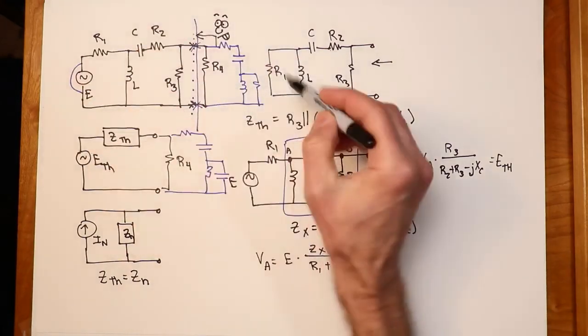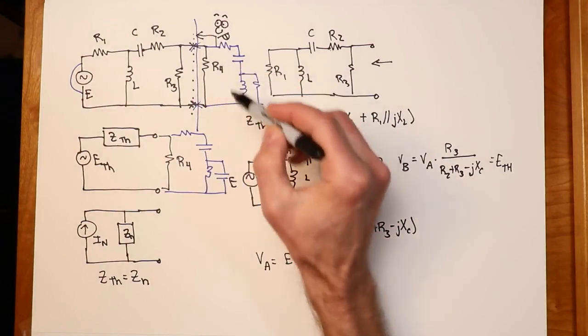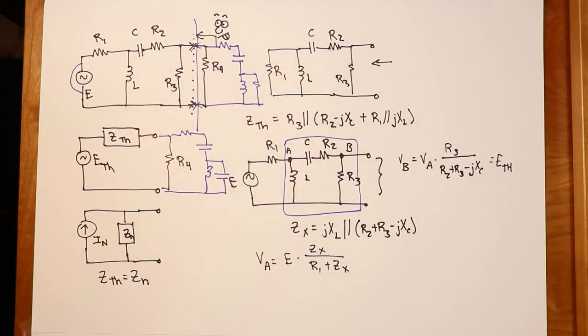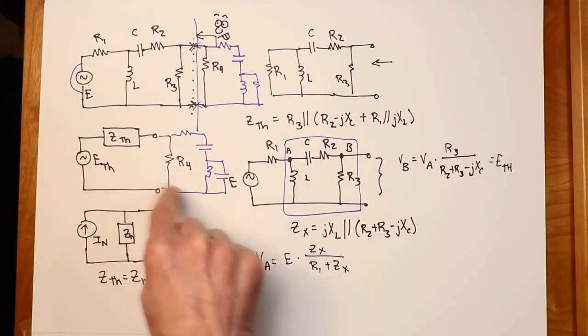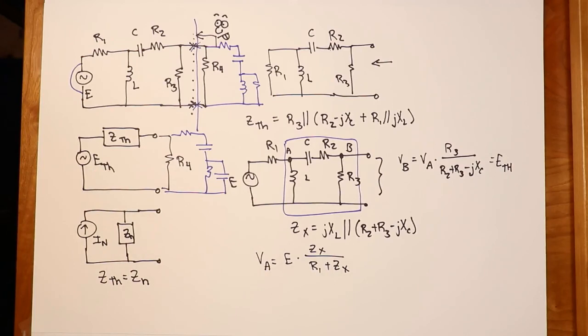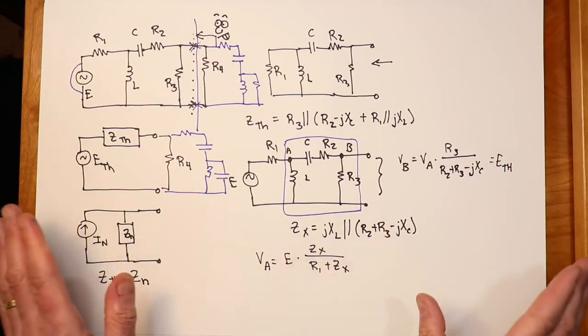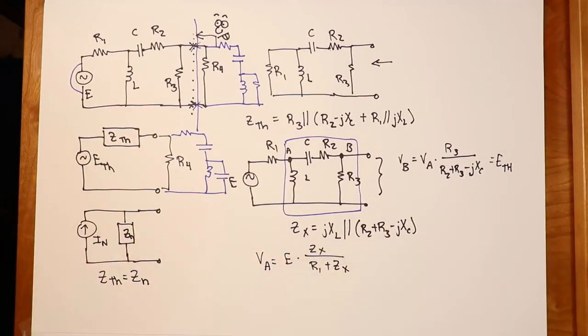This will come in very handy when we look at maximum power transfer. Interesting question is, in this circuit, what value of R4 would produce the maximum amount of power? And this is exactly how we would approach it. If I can simplify it down to here, this kind of computation turns out to be very straightforward. So there we have it.